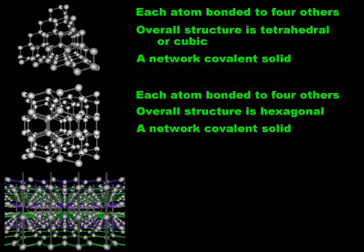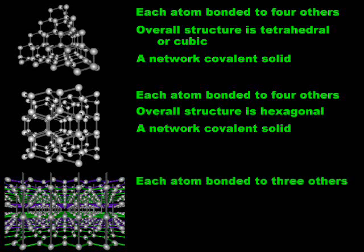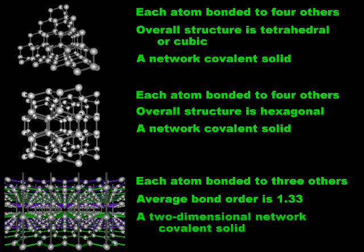Graphite consists of infinite two-dimensional layers of carbon atoms bonded into flat six-membered rings. Each carbon atom is bonded to three others by two single bonds and one double bond, giving an average bond order of 1.33. There is no chemical bonding between these layers, and graphite is said to be a two-dimensional network covalent solid.